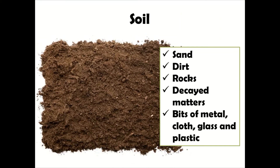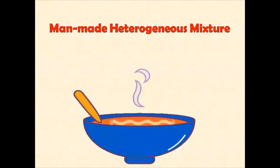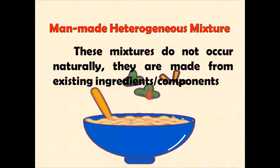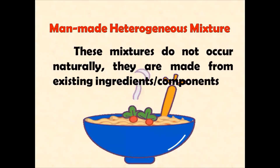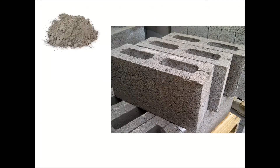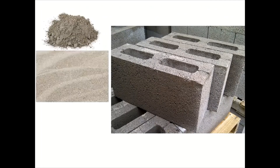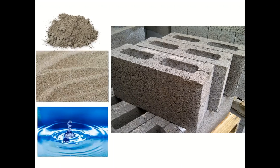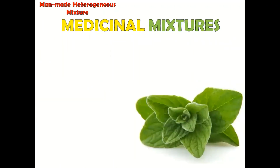If we have heterogeneous mixtures in nature, we also have man-made heterogeneous mixtures. These mixtures do not occur naturally — they are made from existing ingredients or components. For example, concrete cement is made up of cement powder, sand, and water. Another category of man-made heterogeneous mixtures is medicinal mixtures, which are used to treat illnesses.